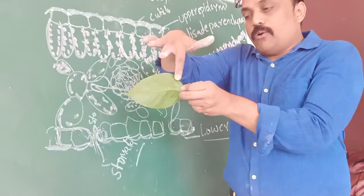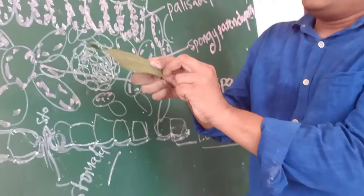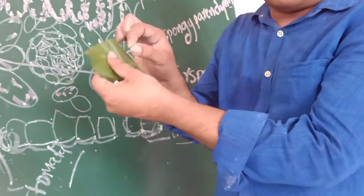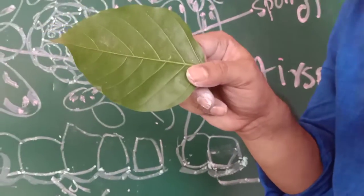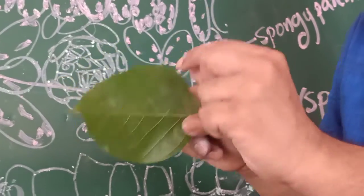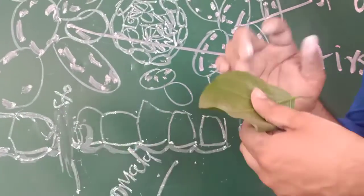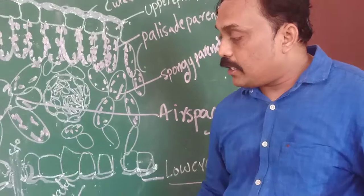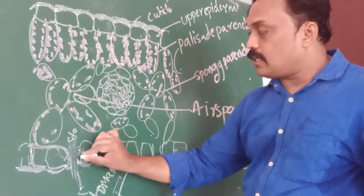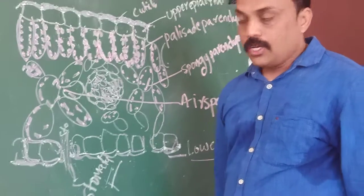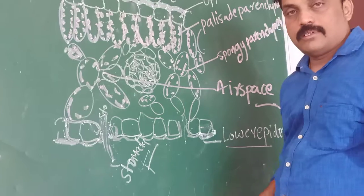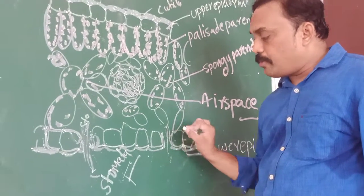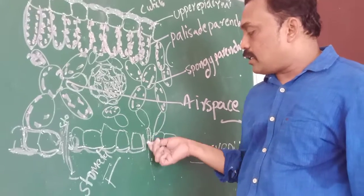These stomata are located at the lower region of the leaf — not in the upper region. In the lower region, we observe small holes. These holes are not visible to the naked eye because they are so minute — microscopic. So if we want to see these stomata, we have to use a microscope only. Stomata are important for the exchange of gases.